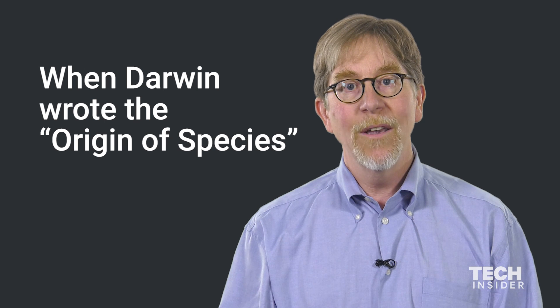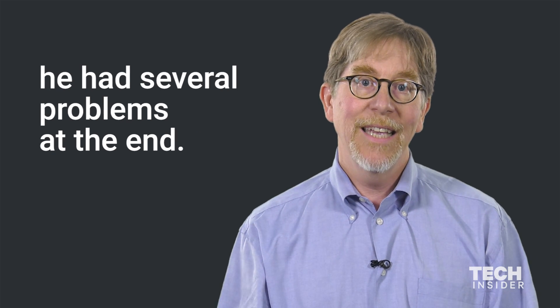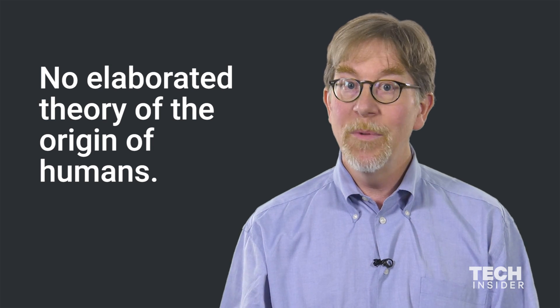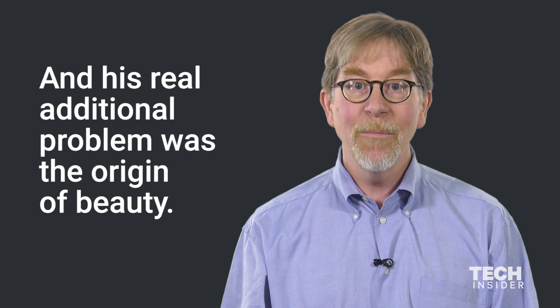When Darwin wrote The Origin of Species, he had several problems at the end. He had no theory of genetics, no elaborated theory of the origin of humans, and his real additional problem was the origin of beauty.